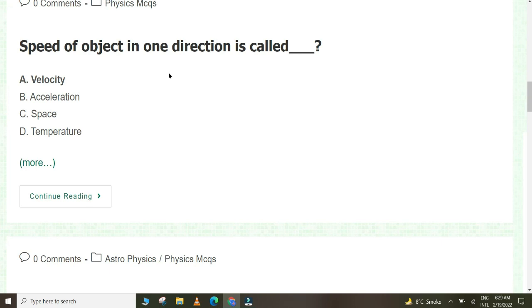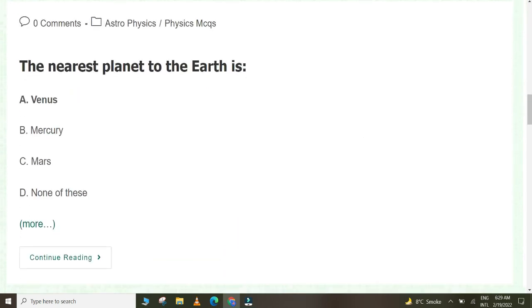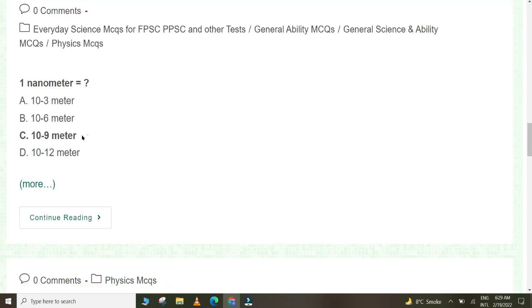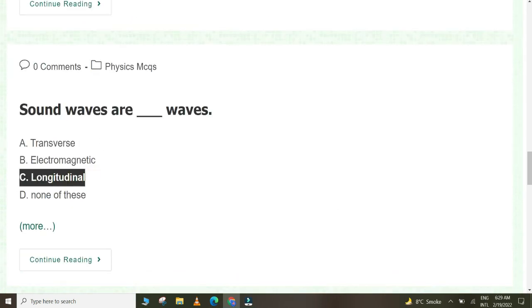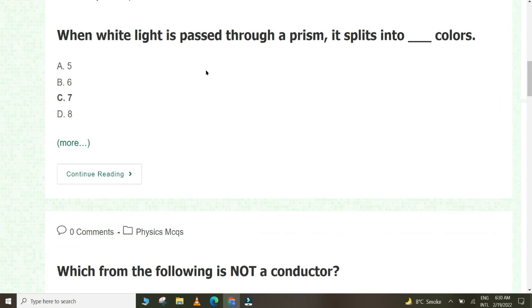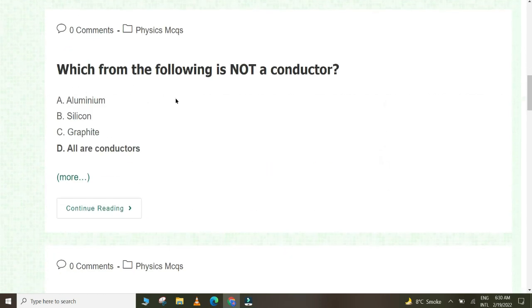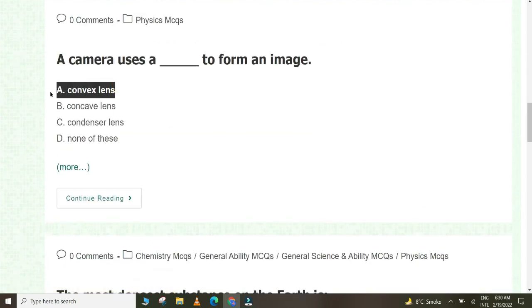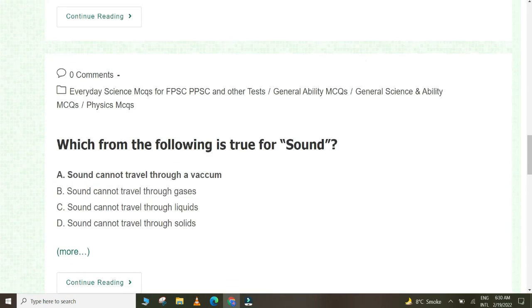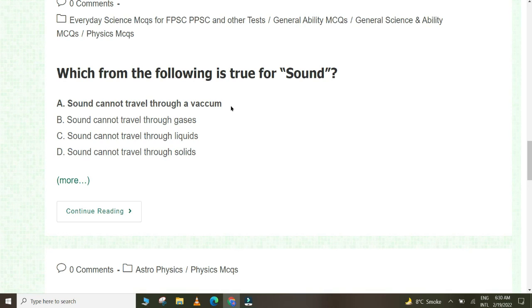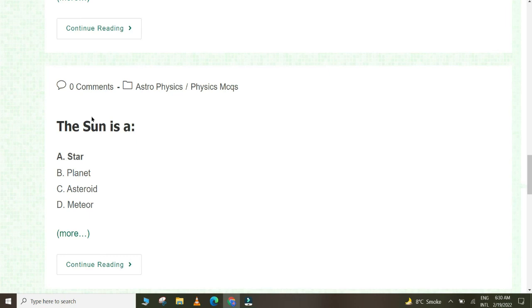Which planet is called Great Red Spot? Jupiter. Speed of object in one direction is called velocity. The nearest planet to the earth is Venus. One nanometer is equal to 10 to the power minus 9 meter. Instrument used for measuring very high temperature is pyrometer. Sound waves are longitudinal waves. When white light is passed through a prism, it splits into seven colors. Which from the following is not a conductor? All are conductors. A camera uses a convex lens to form an image. The most densest substance on earth is osmium. Which from the following is true for sound? Sound cannot travel through a vacuum.